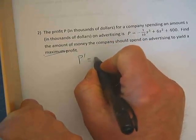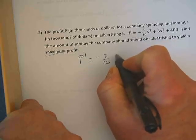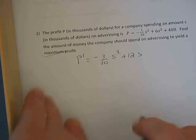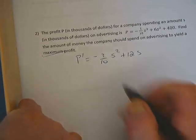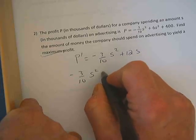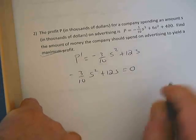And the derivative is going to be negative 3/10 s squared plus 12s. And that maximum is going to occur when this is 0. So we need to set negative 3/10 s squared plus 12s equal to 0.